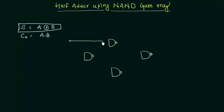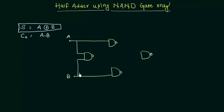This is our first input, A, and this is B. You have to take A into this first gate and also B as one of the inputs to this gate. The output of this gate goes as one of the inputs to this gate and also to another gate. The output of that gate acts as the input to the last NAND gate.